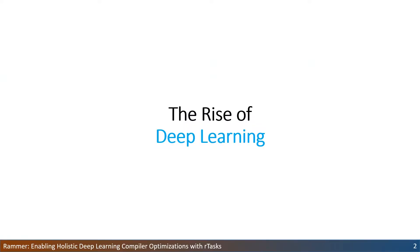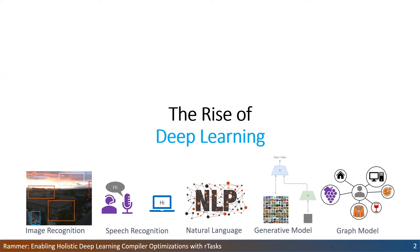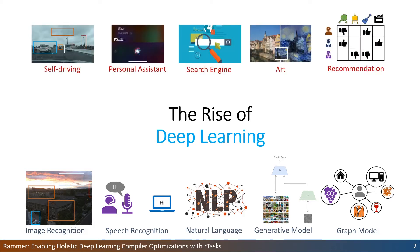In recent years, we have seen a lot of advances in deep learning. For example, image and speech recognition, natural language processing — some of them can even be comparable with humans. With these advances, deep learning has been applied in many real-world applications, like self-driving, search engine, and so on.